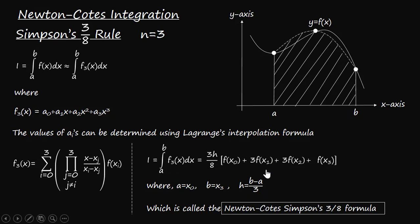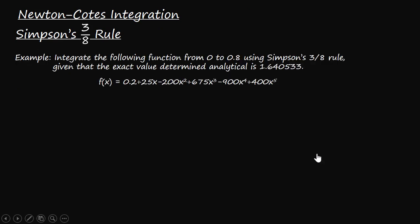Now this formula is called Newton-Cotes Simpson's 3/8 formula. Let's use this formula to calculate the approximate integral. Let's consider the same problem which we discussed in trapezoidal rule and Simpson's one-third rule. We want to integrate the function f(x) from 0 to 0.8 using Simpson's three-eighth rule.